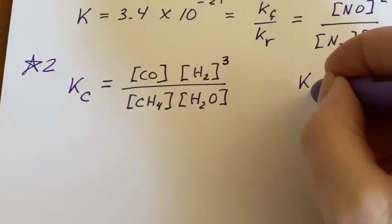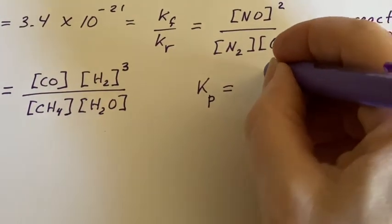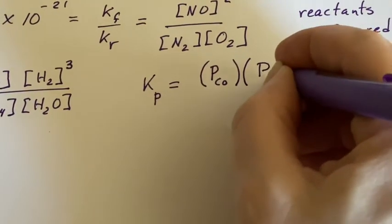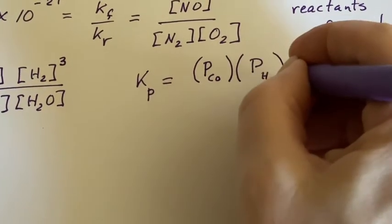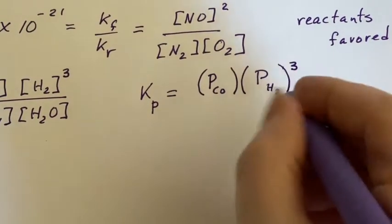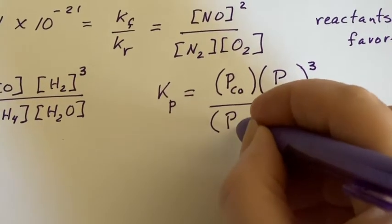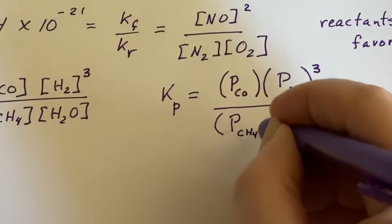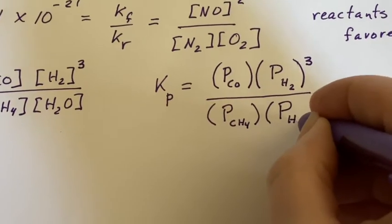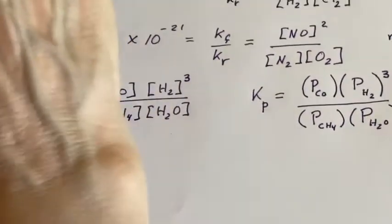They also wanted K sub P. All right. If I'm going to do that, then I would go find the pressure of carbon monoxide. I would also find the pressure of the hydrogen gas, raise it to the third power because it appears that many times in the balanced equation. And it would be over the pressure of the methane and the pressure of the water vapor. And that's all there is to writing those equilibrium constant expressions.